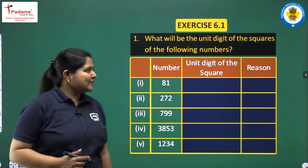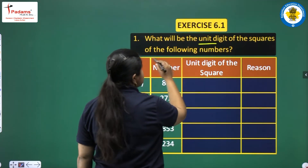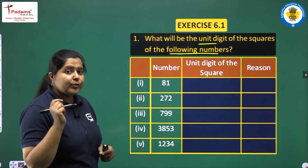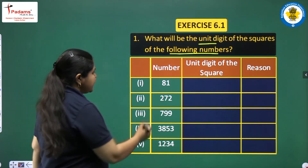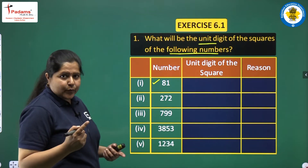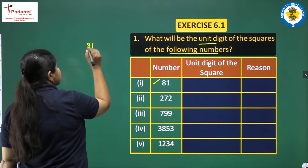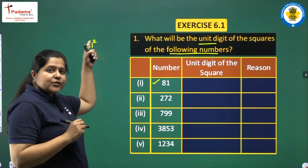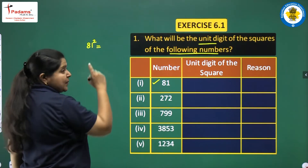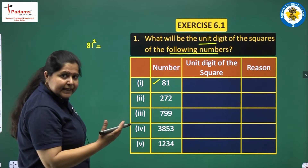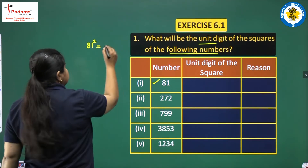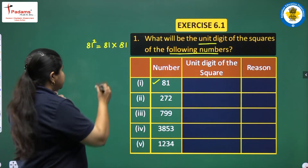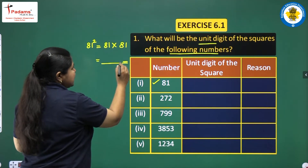Here is the first question: What will be the unit digit of the squares of the following numbers? We have some numbers here and we need to find the unit digit of their squares. The first number is 81. Let's do the square first. We denote it by power 2, read as 81 squared, meaning 81 multiplied by itself. Whatever answer comes, we need to tell the last digit — the ones place digit.